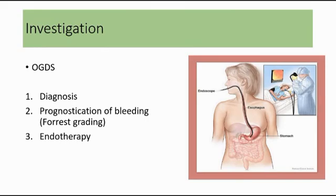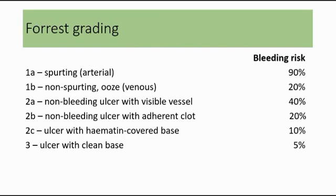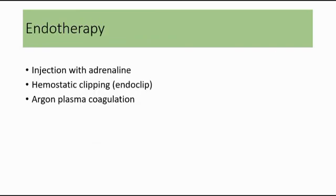The second purpose of OGDS is prognostication of bleeding using the Forrest grading, which is divided into 1A, 1B, 2A, 2B, 2C, and 3. The surgeon grades the ulcer, and from the grade we can determine the bleeding risk. For example, if graded 1A, there is spurting of blood from an arterial source, and the bleeding risk is 90%. The third purpose of OGDS is endotherapy — treatment for the bleeding peptic ulcer — using three methods: injection with adrenaline, hemostatic clipping using an endoclip, and argon plasma coagulation. Normally two of the three are used together: hemostatic clipping and argon plasma coagulation.